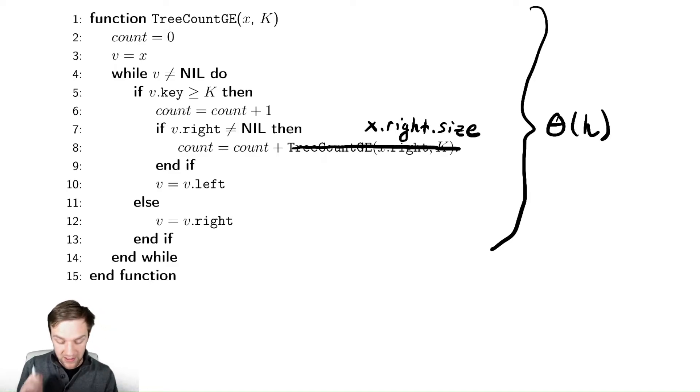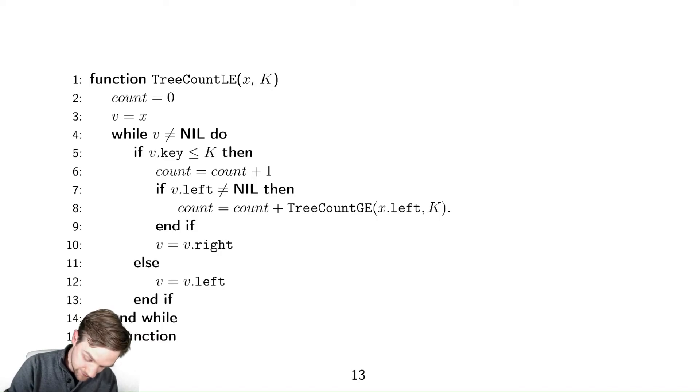So we could similarly implement a way to count the number of things less than or equal to a value. We have that down here. Let's quickly fix that for you guys. This should be x.left.size to be our smarter implementation that now uses size.